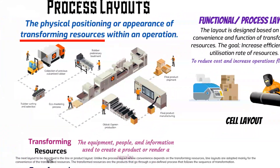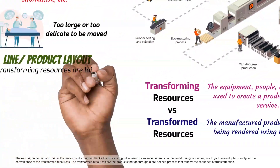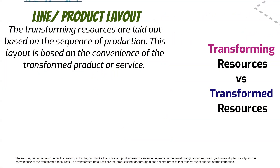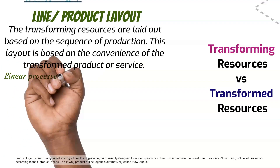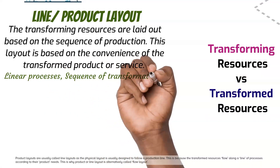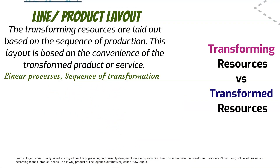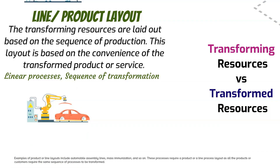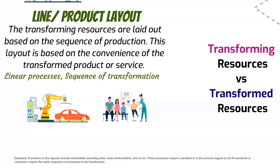The next layout to be described is the line or product layout. Unlike the process layout where convenience depends on the transforming resources, line layouts are adopted mainly for the convenience of the transformed resources. The transformed resources are the products that go through a predefined process that follows the sequence of transformation. Examples of product or line layouts include automobile assembly lines, mass immunization, and so on. These processes require a line process layout as all the products or customers require the same sequence of processes to be transformed.